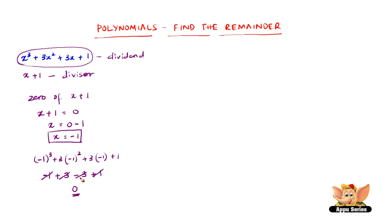So we have 0. Therefore, 0 is the remainder of x cube plus 3x squared plus 3x plus 1. Let us solve a couple more problems based on the same concept.